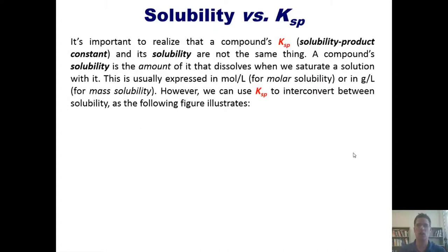Now, to solubility versus Ksp. It's important to realize that a compound's Ksp, its solubility product constant, and its solubility are not the same thing. A compound's solubility is the amount of it that dissolves when we saturate a solution with it. This is usually expressed in moles per liter for molar solubility or in grams per liter for mass solubility. However, we can use Ksp to interconvert between solubility as the following figure shows.